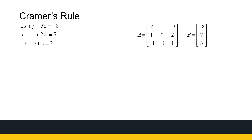Here I've got a system. The coefficient matrix A is given as: 2, 1, -3 / 1, 0, 2 / -1, -1, 1. And I've got my matrix B: -8, 7, 3. So we're going to be calculating a whole lot of determinants, and use these determinants to calculate X, Y, and Z.